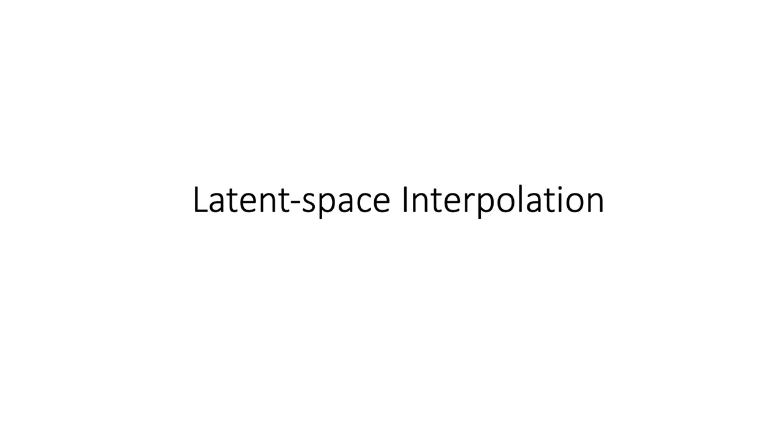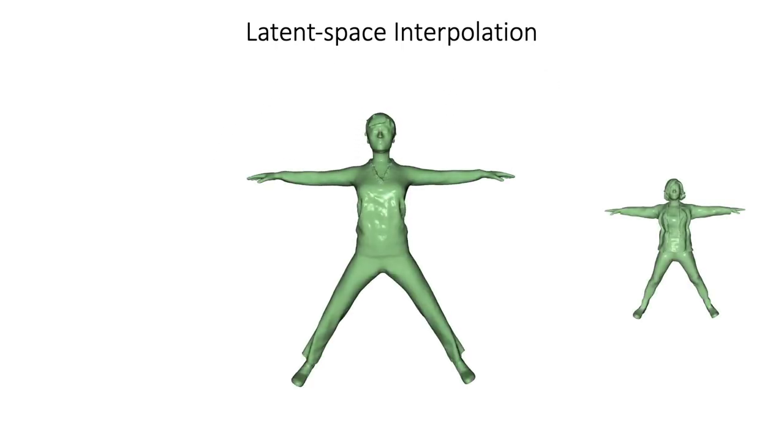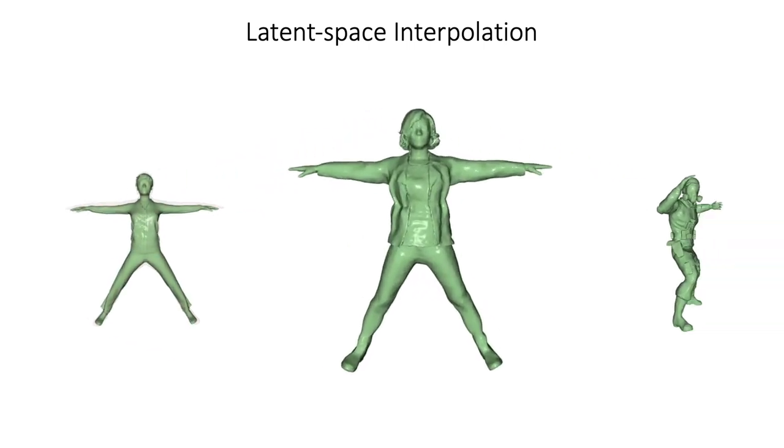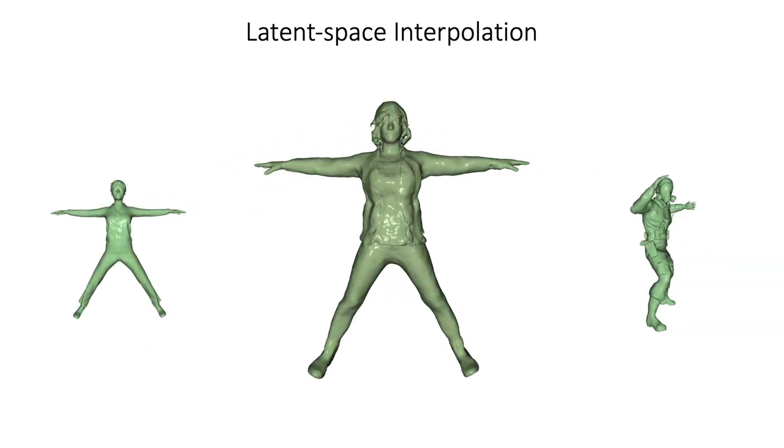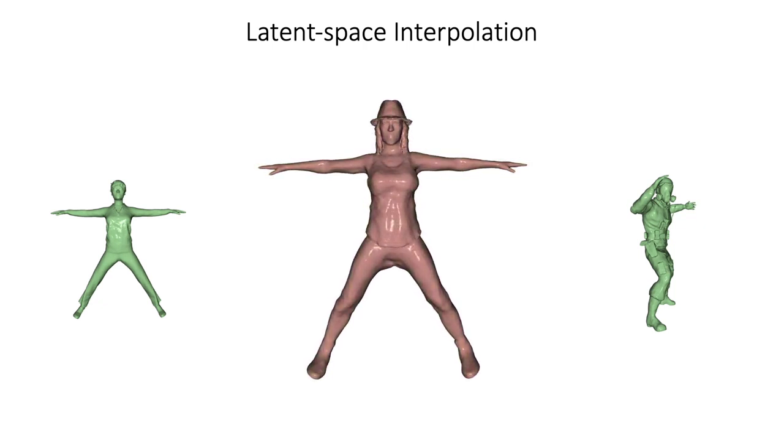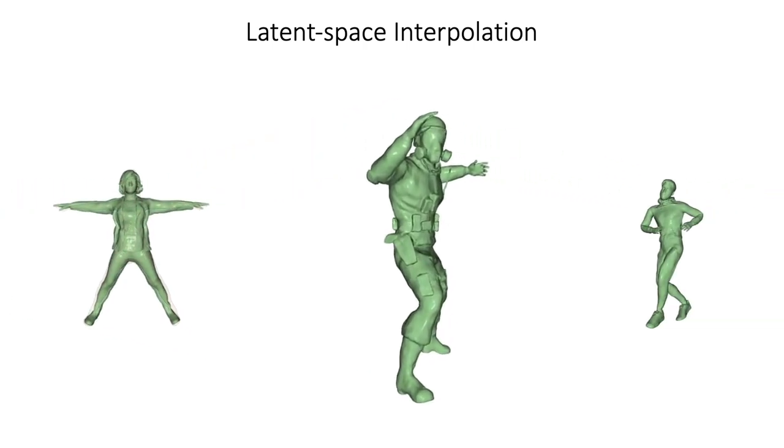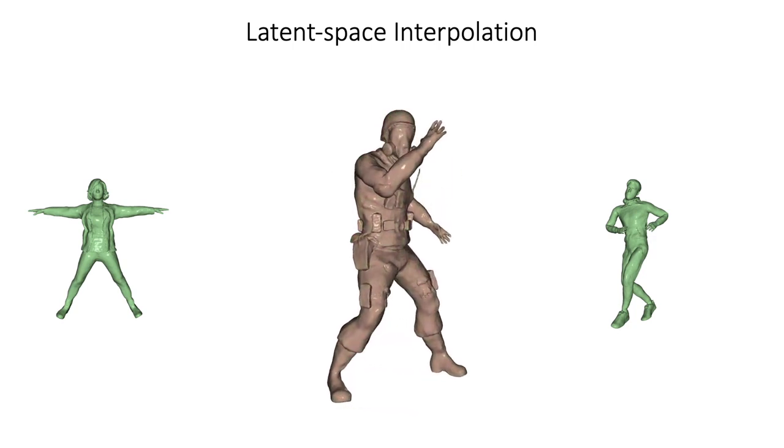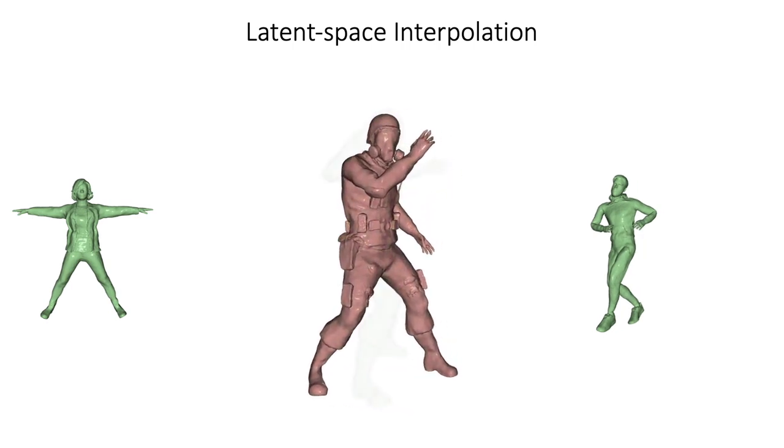Our latent spaces of shape and pose can be traversed to obtain novel shapes and poses. Here we show interpolation across the shape space, as well as across the pose space. Latent space interpolation suggests continuity of our learned representations.